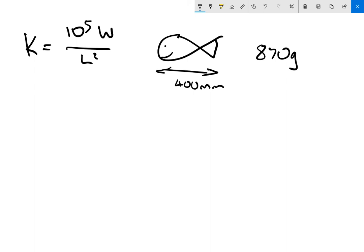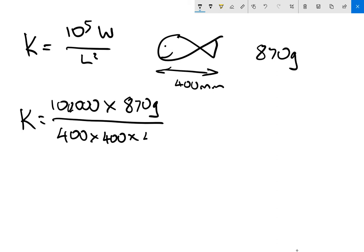We've plugged this into this formula. Now, 10 to the 5 equals 10 times 10 times 10, 5 times. So it's equivalent to 1 with 5 zeros, or 100,000, times our weight, which is 870 grams, divided by our length, 400 cubed, times 400, times 400. So 400 times itself 3 times.